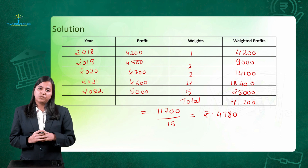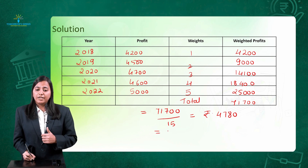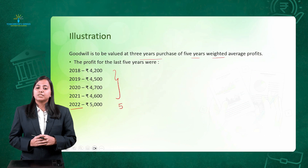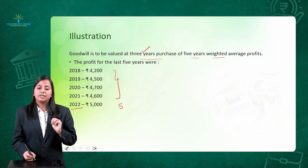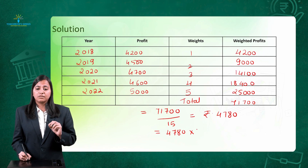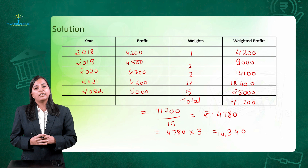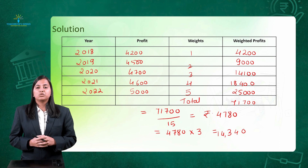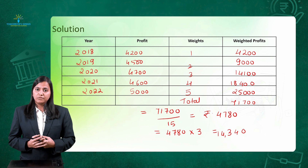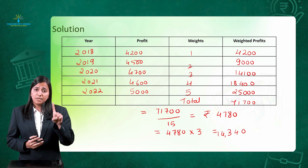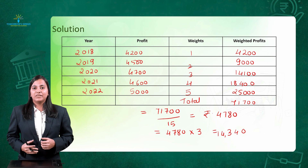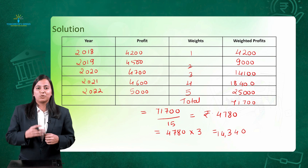In Step 4, we calculate goodwill: weighted average profit multiplied by number of years of purchase, which is 4,780 multiplied by 3, giving 14,340 rupees. So the value of goodwill is 14,340 rupees. In this video, we have covered the average profit method with its two sub-methods — simple average profit and weighted average profit. Stay tuned for more videos where I will cover the next method, which is the super profit method. Thank you.